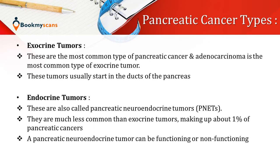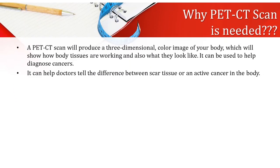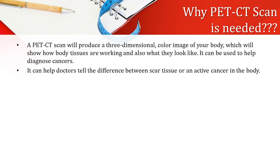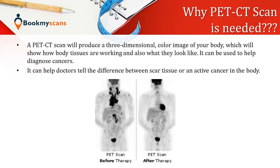A pancreatic neuroendocrine tumor can be functioning or non-functioning. Why is a PET CT scan needed? PET scans do not work for all cancers. In general, a PET scan is most useful for rapidly growing cancers such as Hodgkin's disease, kidney cancer, pancreatic cancer, and gynecological cancer. A PET scan produces a three-dimensional color image of your body, showing how body tissues are working and what they look like. It can be used to help diagnose cancers and help doctors tell the difference between scar tissue and active cancer in the body.